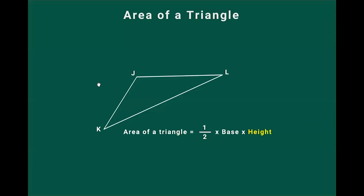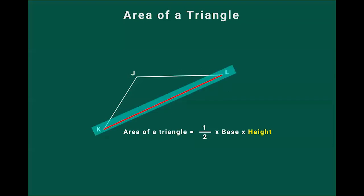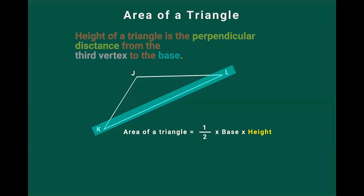You must remember that we can choose any side of the triangle as the base. Here we have three sides of the triangle: JK, KL, and JL. We can choose any of these sides as the base. So if I choose KL as my base, what will be the height of the triangle? The height of the triangle will be the perpendicular distance from the third vertex to the base.